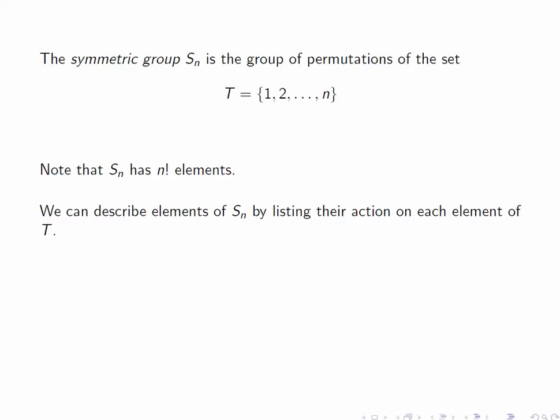We can describe the elements of Sn by listing their action on each element of T. For instance, we can do this in a little matrix indicating the result of applying the element of Sn to each of the integers 1 up to 6. So here our permutation sends 1 to 6, 2 to 2, 3 to 4, 4 to 3, 5 to 1, and 6 to 5.